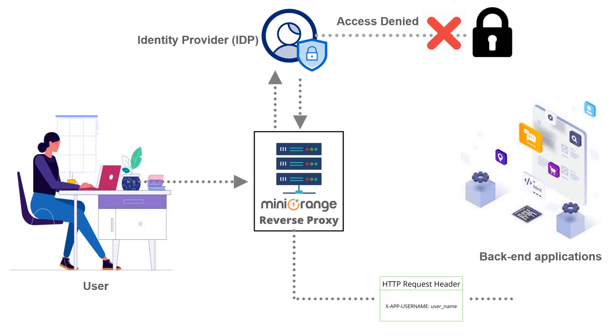Then the reverse proxy server will set the header for the HTTP request received — for example, xappusername with the value of the user's unique username. If the user is not authenticated, an error message will be shown depending on the backend application in use.